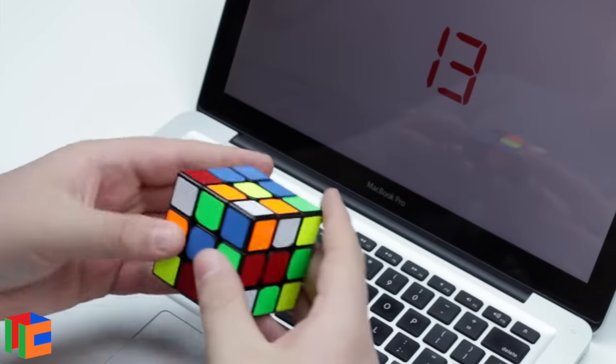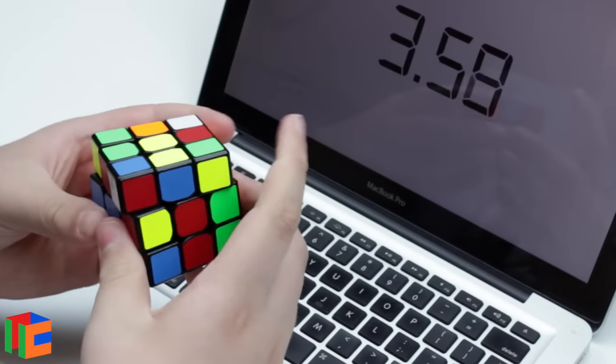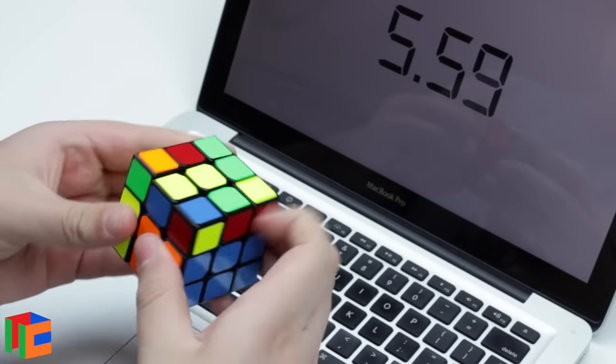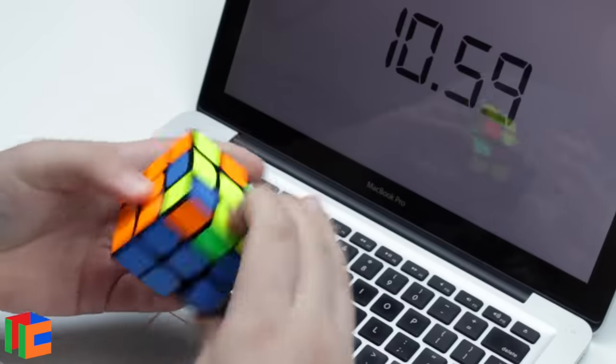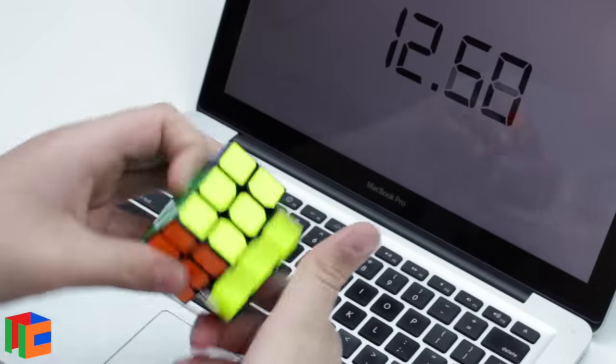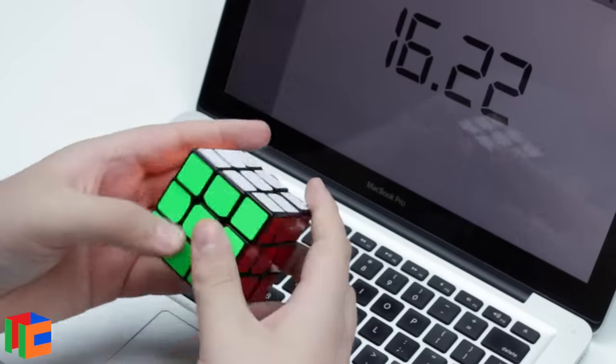One of the biggest issues I've had with the Gans 356, and other cubes with the squared-off corner design, is catching. Luckily, the catching on this cube is not nearly as bad as it is on the Gans 356, which is a huge bonus for me. The cube still could do with a slight rounding of the corners, but of course, corner twists have been completely prevented with this design choice.